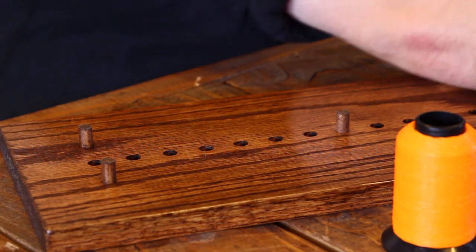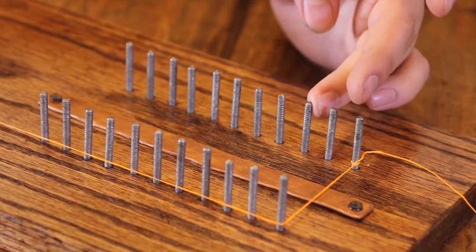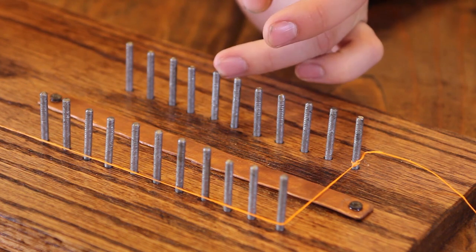All right, so now we've got it attached and we're going to go around this first one. And what each one of these nails represents is one strand in the bundle.